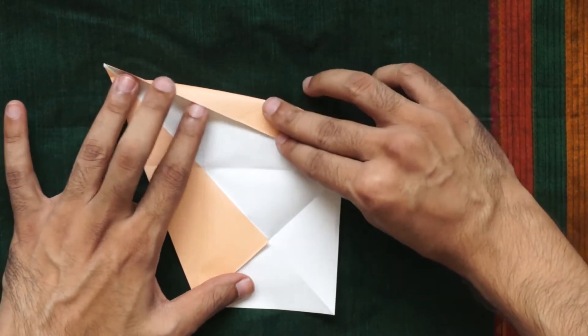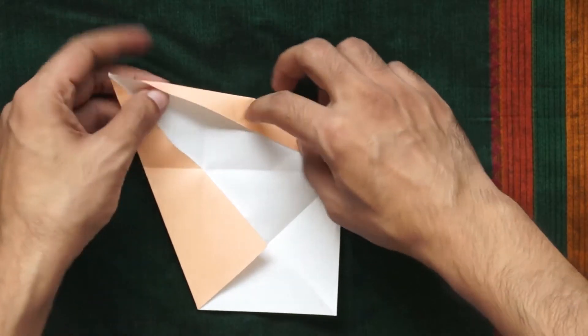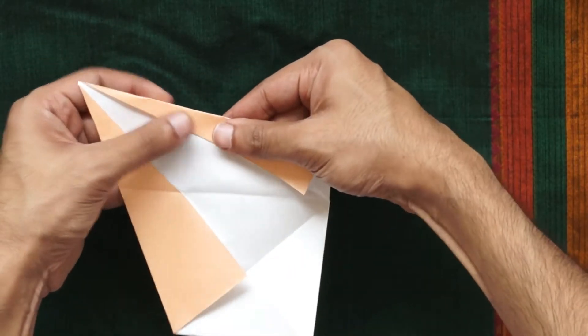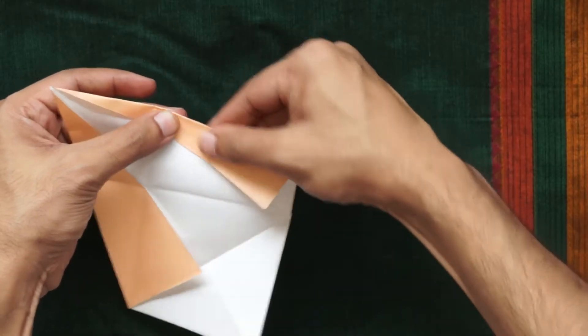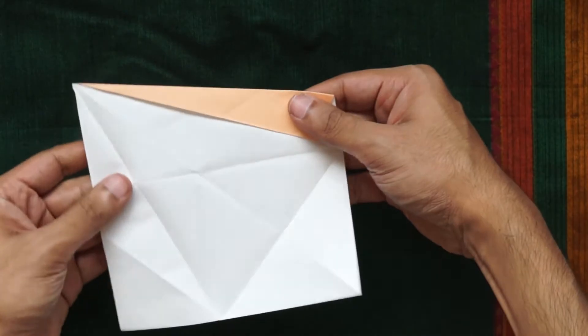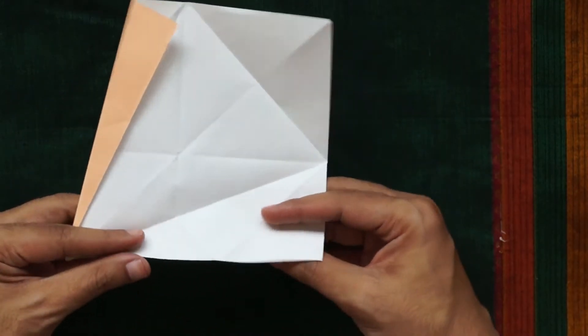Unfold one of the triangular flaps and fold the long edge of it towards the crease which you just unfolded. Unfold the opposite side and repeat the same fold to make it symmetrical.